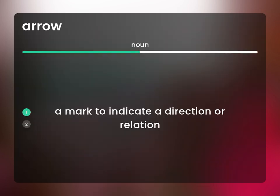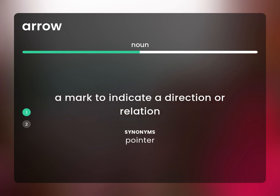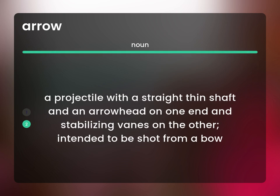A mark to indicate a direction or relation. Pointer. A projectile with a straight thin shaft and an arrowhead on one end and stabilizing veins on the other, intended to be shot from a bow.